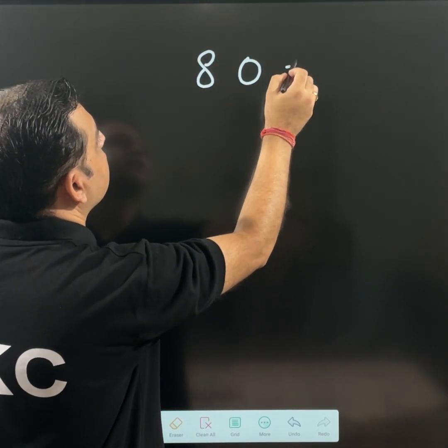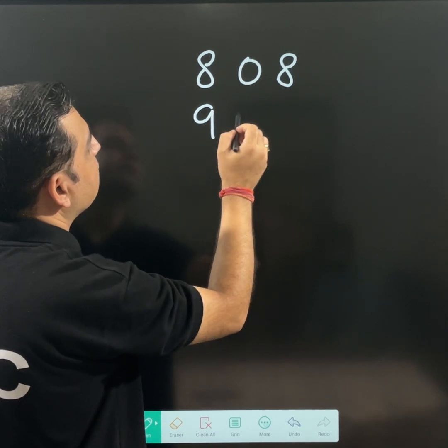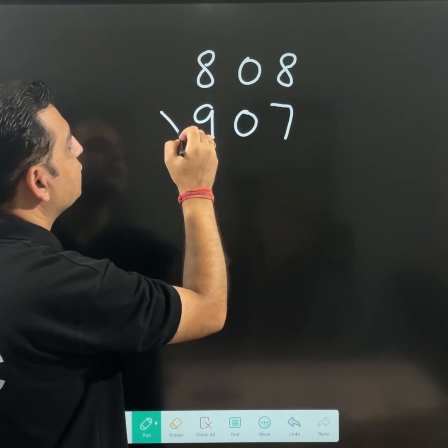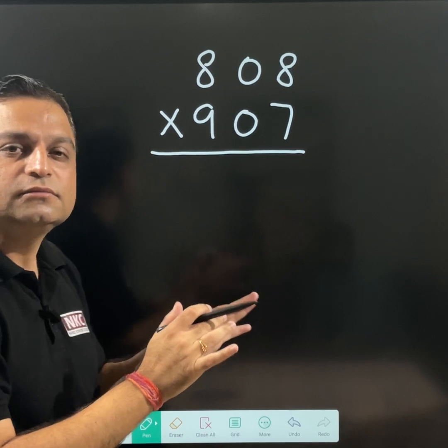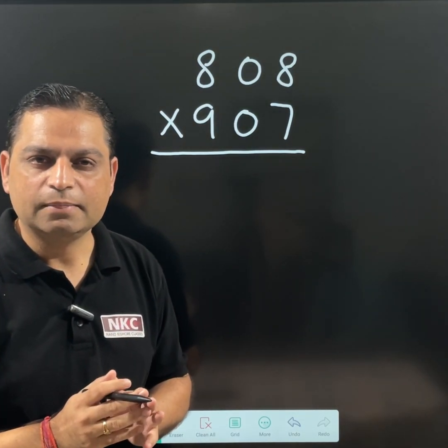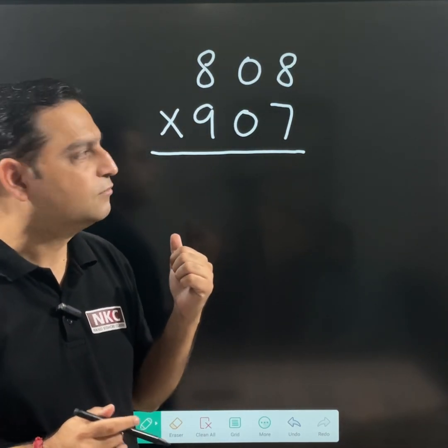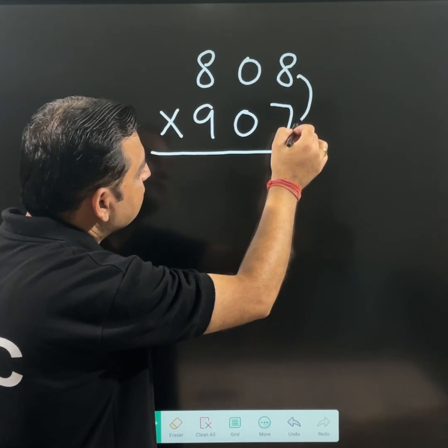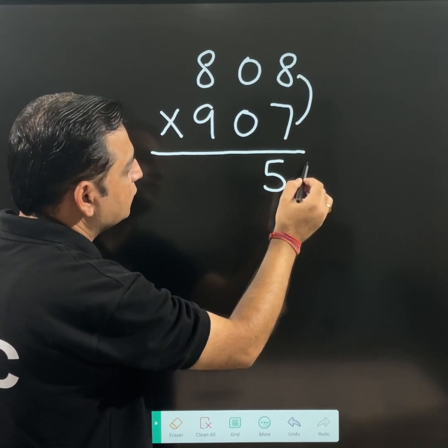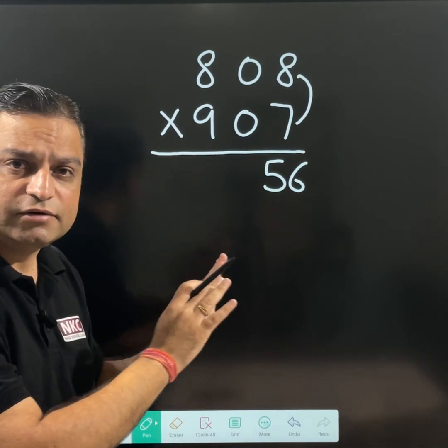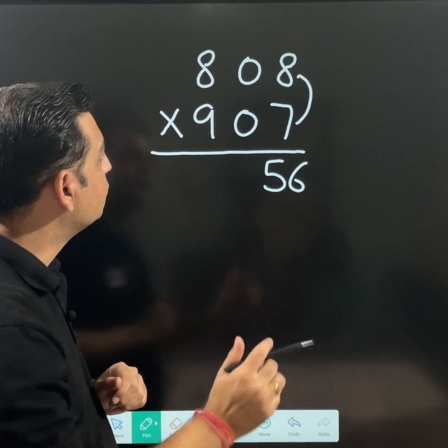Let's suppose I am having big numbers. For example, 808 to be multiplied with 907. Now with 3-digit numbers, chances are there we can get it. But still it will be very easy. What is 8 multiplied by 7? This is 56, which I have written at the end.